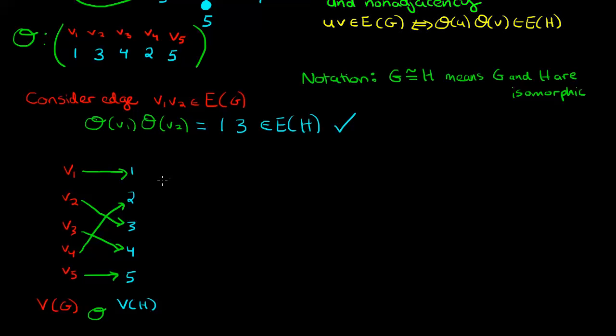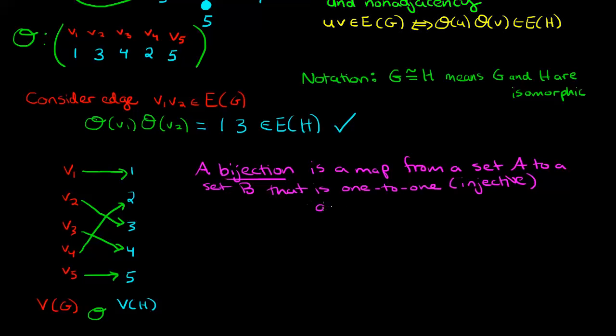So now we're ready for the actual definition of the word bijection. A bijection is a map from a set A to a set B that is both one-to-one, which is also called injective, and onto, which is also called surjective. I didn't know what a bijection was and now you're telling me it's something that is an injection and a surjection, so it's injective and surjective, but I don't know what those terms are.